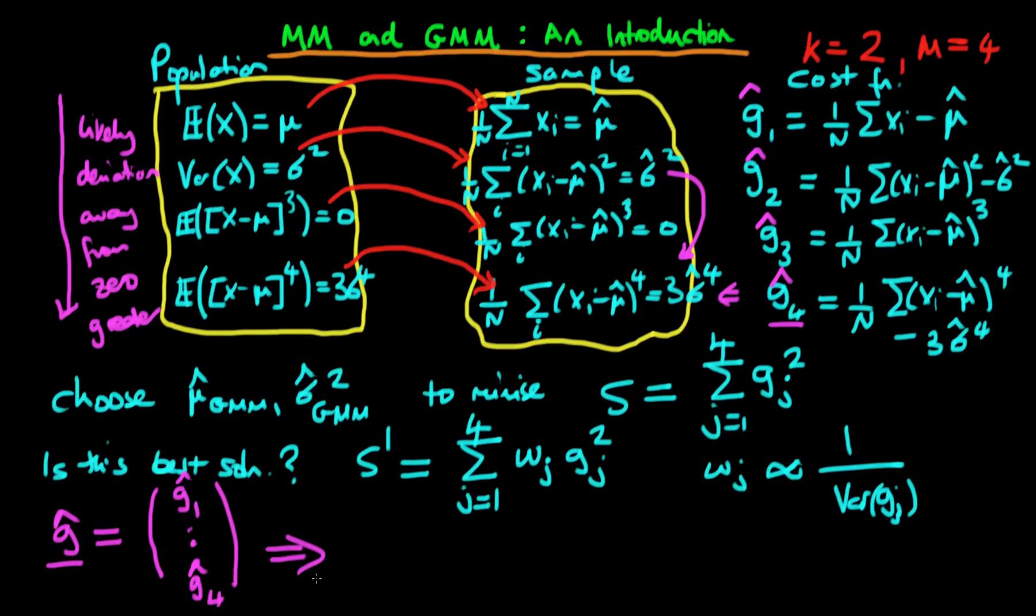And then what that allows us to do is that allows us to formulate a more general cost which we're going to minimize. I'm going to call it S double prime, which we're going to define in terms of matrices and vectors, which is equal to G hat prime—in other words, the transpose of this—times by some weighting matrix times by G hat.